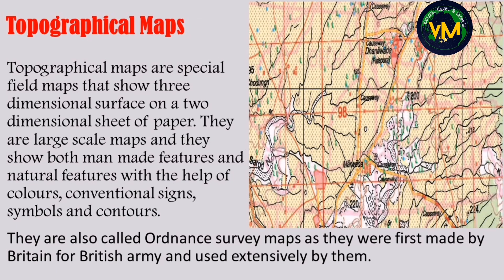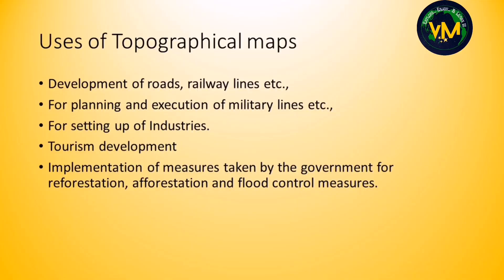Topographical maps are also called ordnance survey maps because they were first made by the British for the British army. Their uses are varied: they are useful for development of roads and railway lines, for planning and executing military operations, for setting up industries, developing tourism, and even for afforestation and flood control measures.